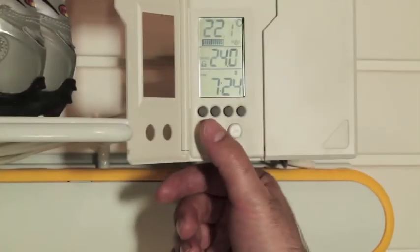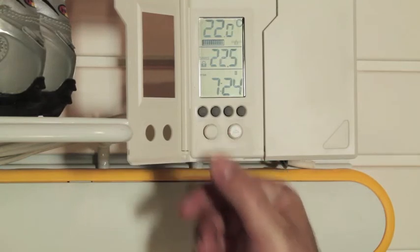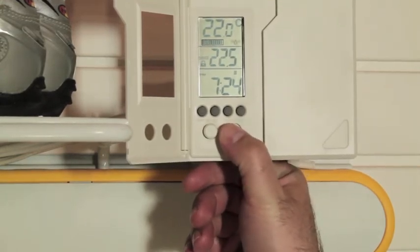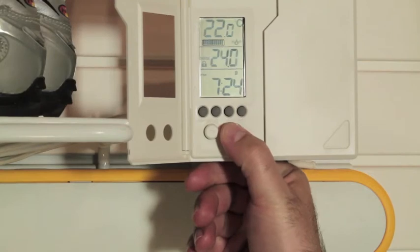Now we can use the DOWN ARROW button to reduce the temperature, but the UP ARROW button will only bring the temperature as high as our limit, which here is set to 24.